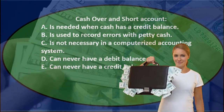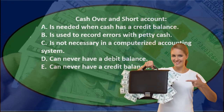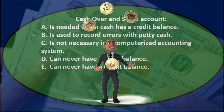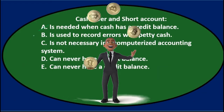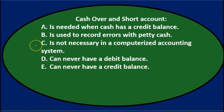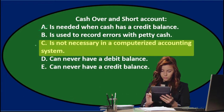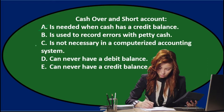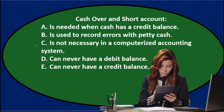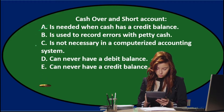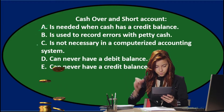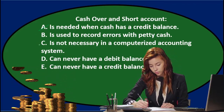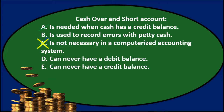B says it is used to record errors with petty cash — that's kind of what we're doing, since the cash is different from the physical count versus what the register says, so we'll keep that for now. C says it is not necessary in a computerized accounting system. Even with a computerized system, we still have to physically count the cash and it may be off from what the register says. So it's not C.